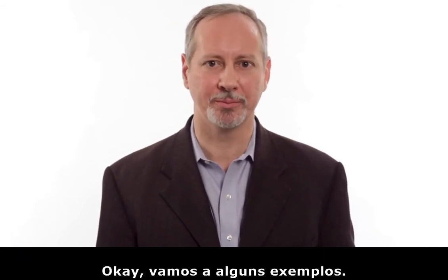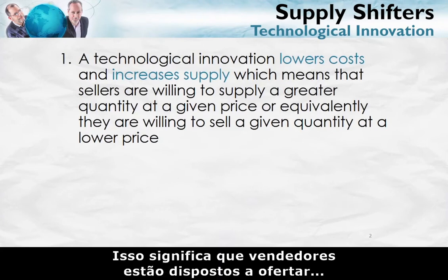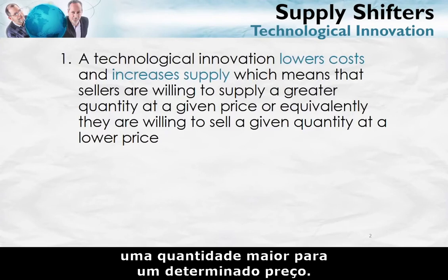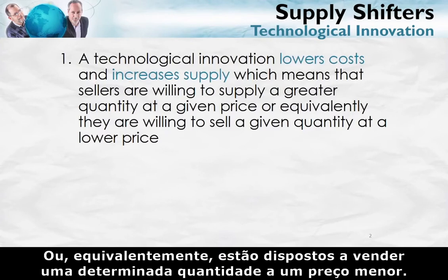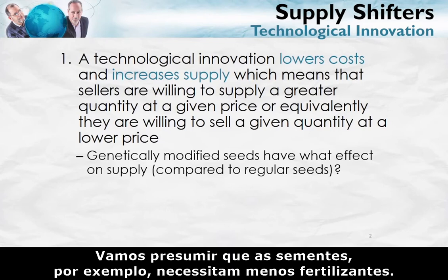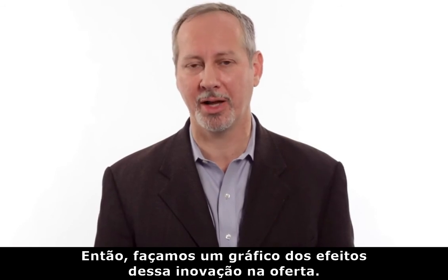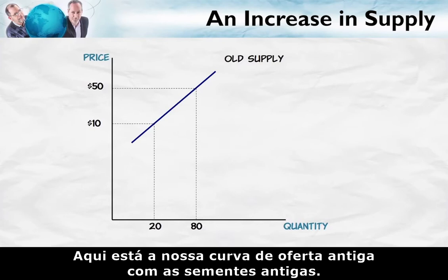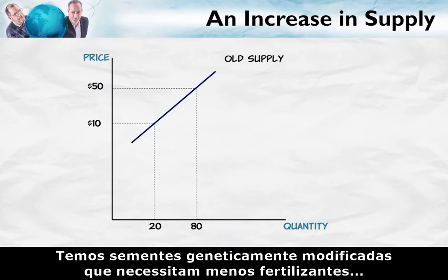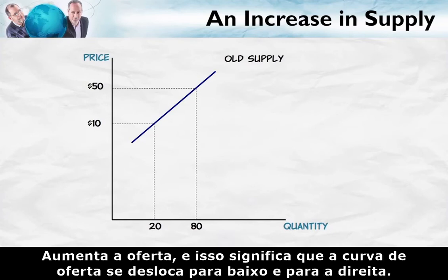Let's do some examples. A technological innovation lowers costs and therefore increases supply — sellers are willing to supply a greater quantity at a given price, or equivalently, willing to sell a given quantity at a lower price. For example, genetically modified seeds that require less fertilizer reduce costs. Here's the old supply curve with the old seeds. With the innovation, costs decrease and supply increases, meaning the supply curve moves down and to the right.